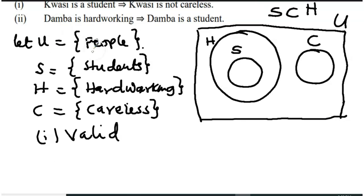Now the second one. Damba is hardworking implies that Damba is a student. So this is the set of hardworking people. Yes, Damba can be here and Damba can also be here. So the fact that Damba is hardworking does not mean that Damba is a student. So this statement is invalid.